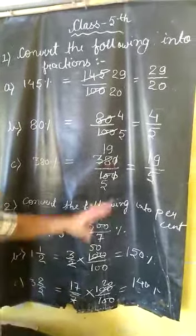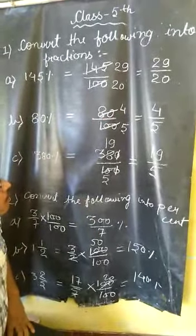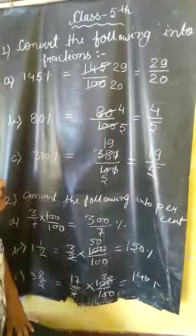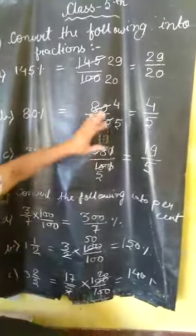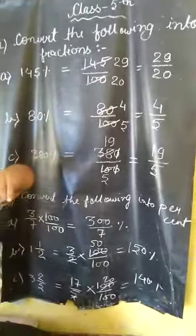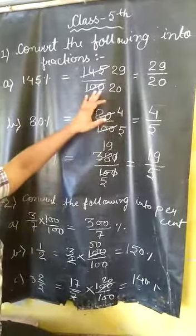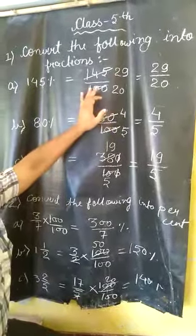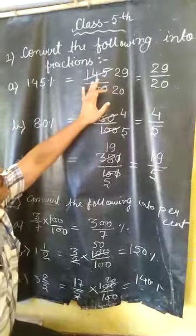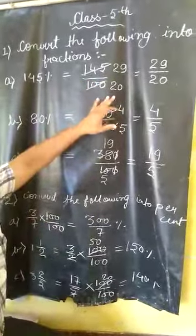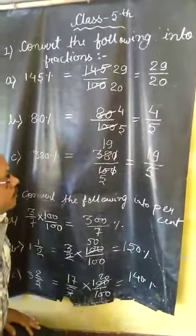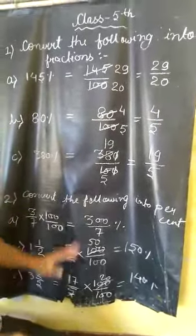After writing as a fraction part, we can find the GCF of both sides. After finding the GCF of 145 upon 100, we get 5. So we divide 145 by 5 and 100 by 5. After dividing by 5, we get 29 and we get 20. So our fraction part will be 29 upon 20.